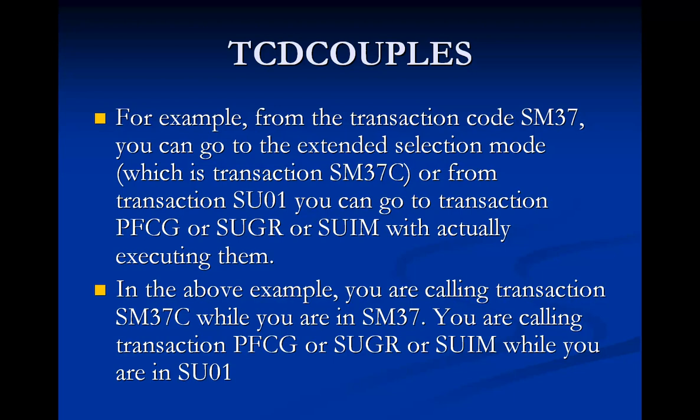So essentially, when you execute SM37 and then jump to SM37C. Similarly, when you execute SU01, from there you can go to SUIM, PFCG, SUGR, or SUPC — there are a number of transaction codes you can navigate to from SU01. So what is happening is you are executing one transaction code and from there jumping to some other transaction code.